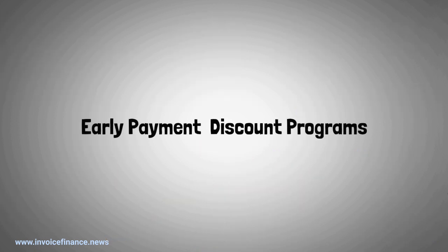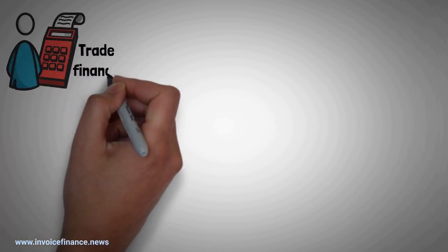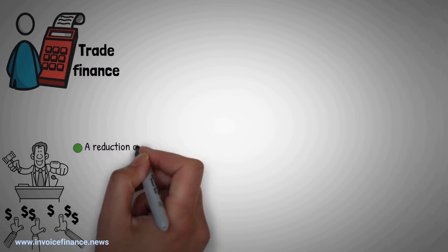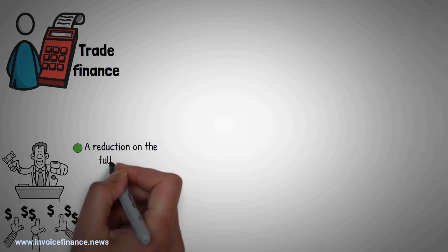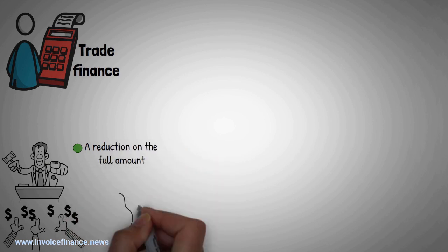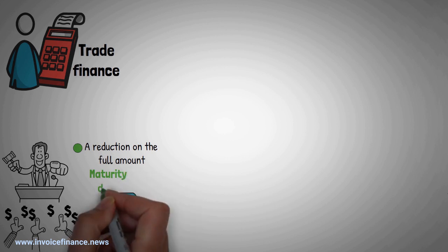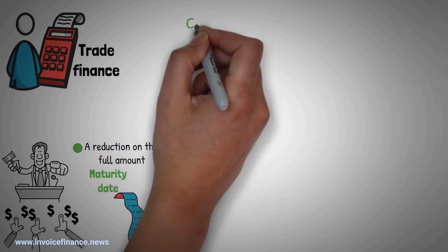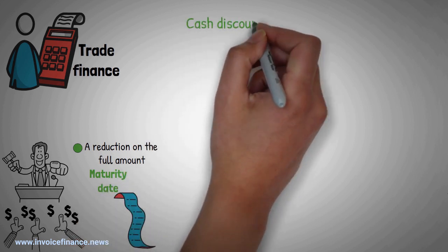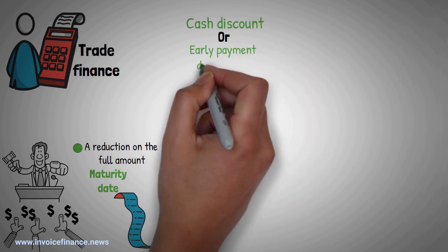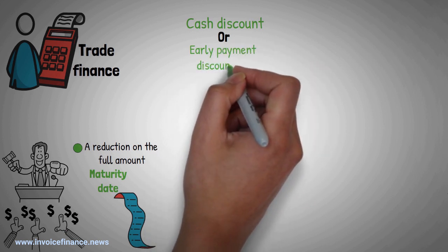Early payment discount programs. An early payment program is another type of trade finance. It involves the buyer being offered a reduction on the full amount specified in the invoice if the buyer pays earlier than the maturity date set on the invoice. Early payment programs are also referred to as cash discount or early payment discounting.